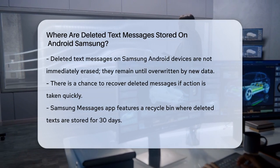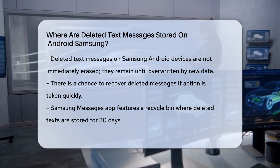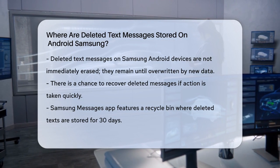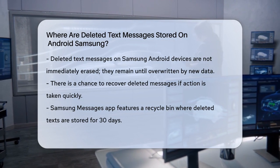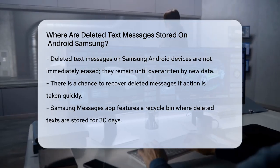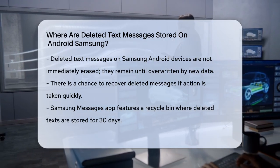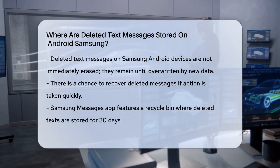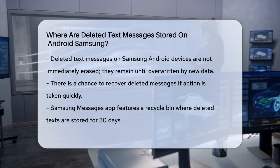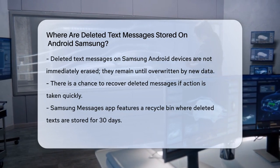When you delete a text message on a Samsung Android phone, it doesn't vanish into thin air immediately. Instead, the space occupied by the message is marked as available for new data. However, the actual content of the message remains on your device until it's overwritten by new data. This means there's a window of opportunity to recover the message if you act quickly.